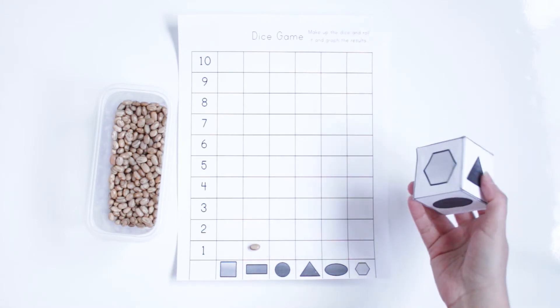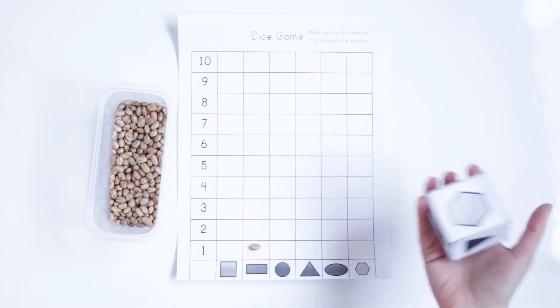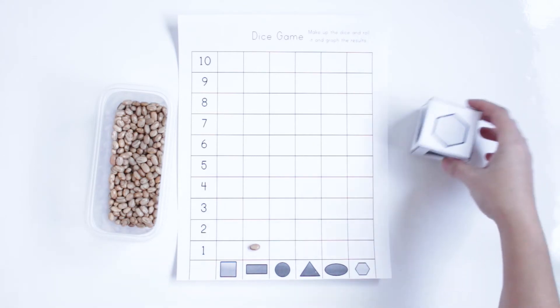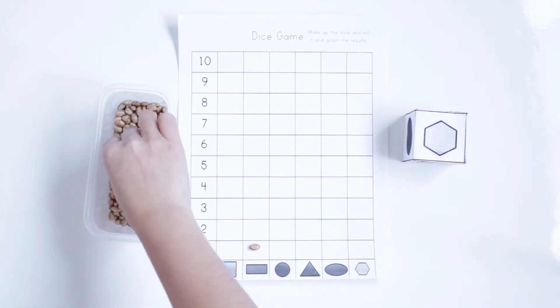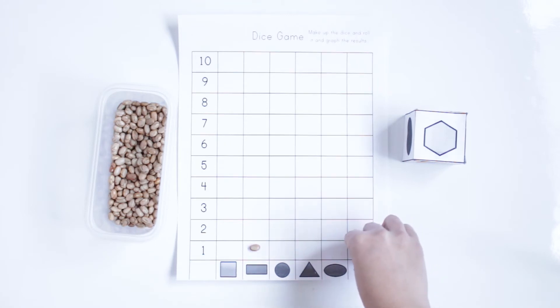Now again, and if you have a sister and brothers, they can play together. Hexagon. Hexagon, so hexagon one time, I'm going to put one bean here.